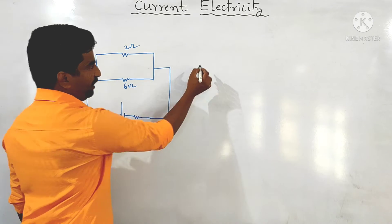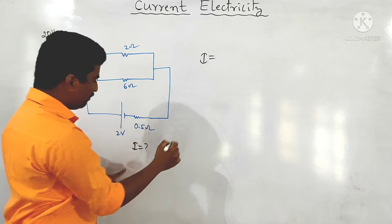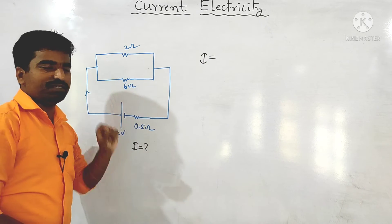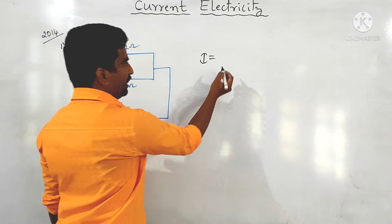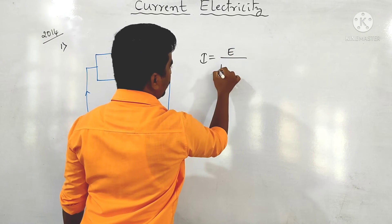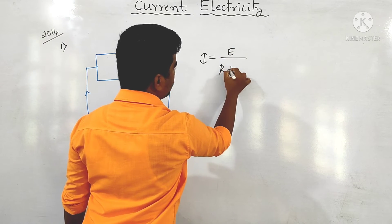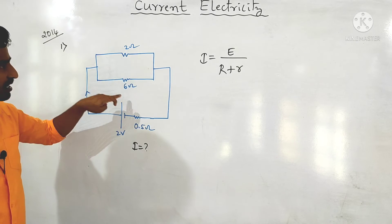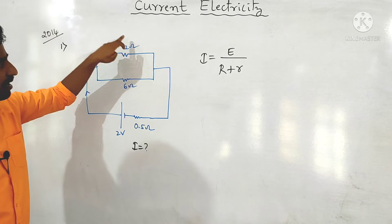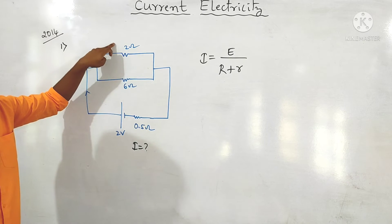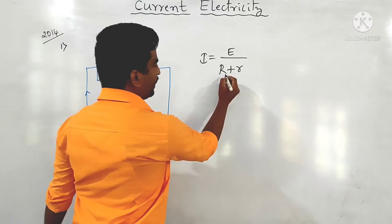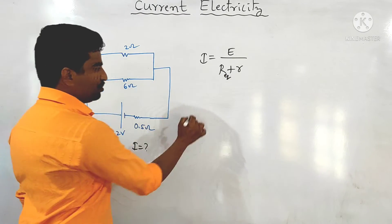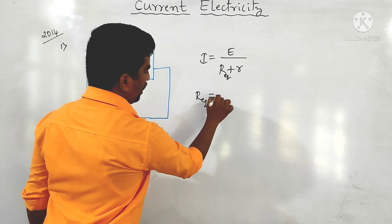To calculate the current I, we use I = E / (R + r), where R is the external resistance. Since the two resistors are in parallel, we first find R equivalent.